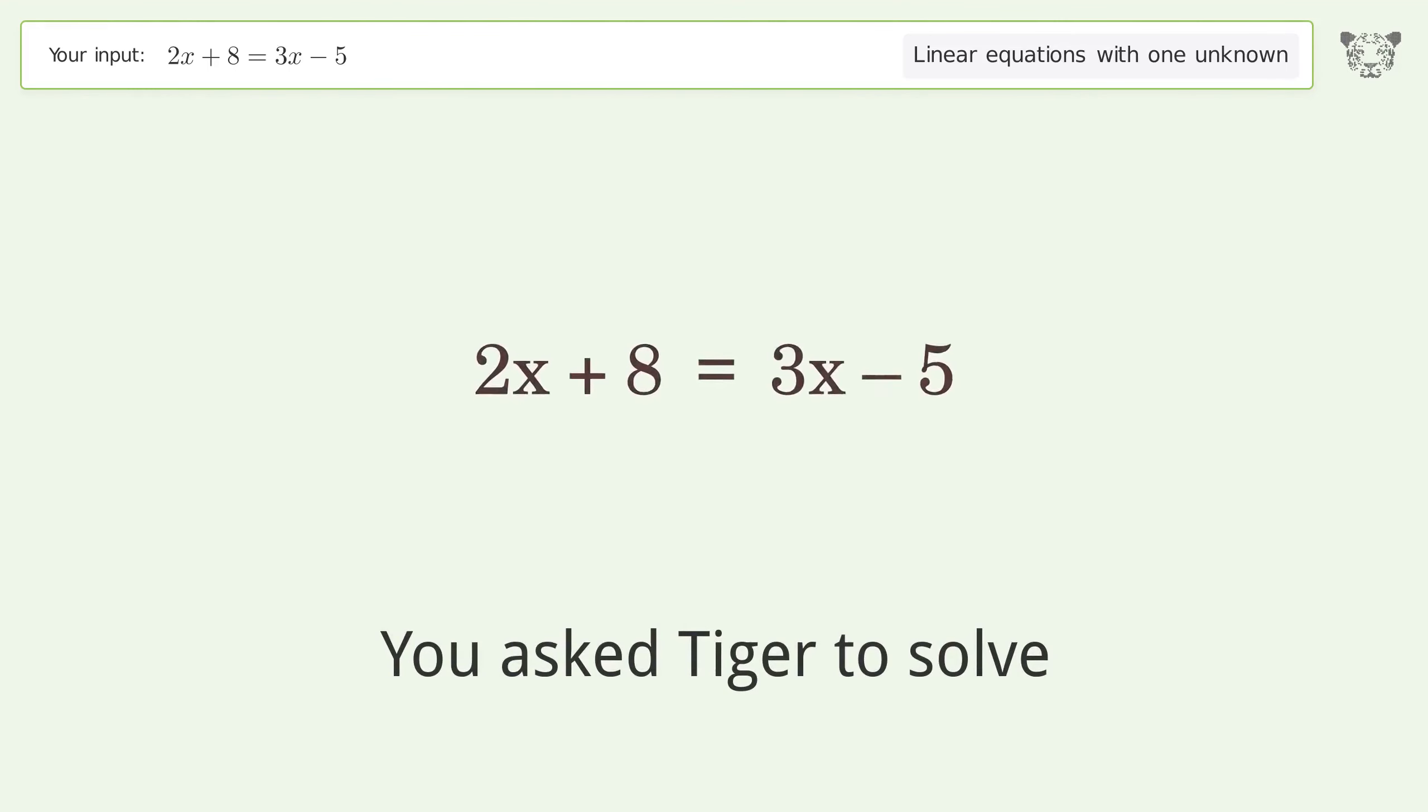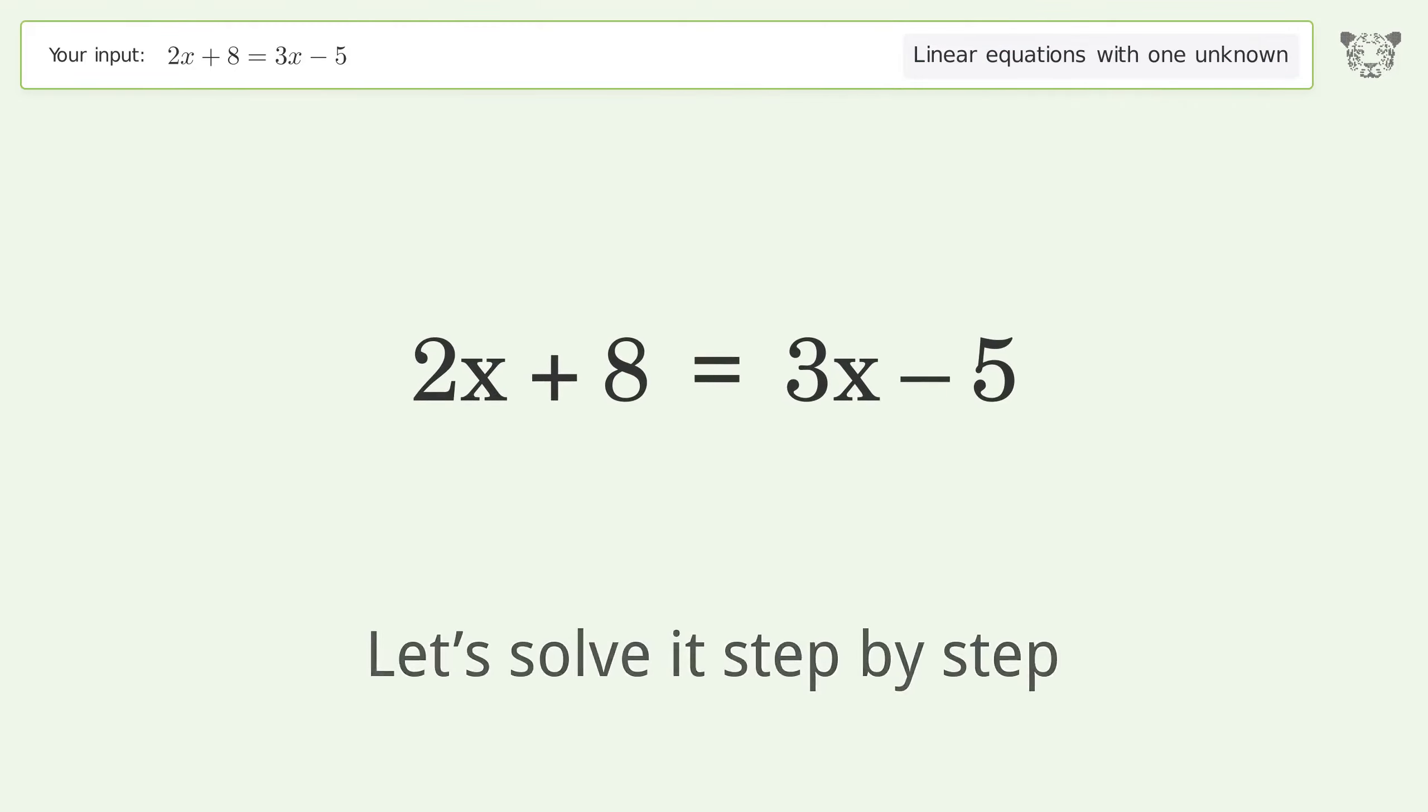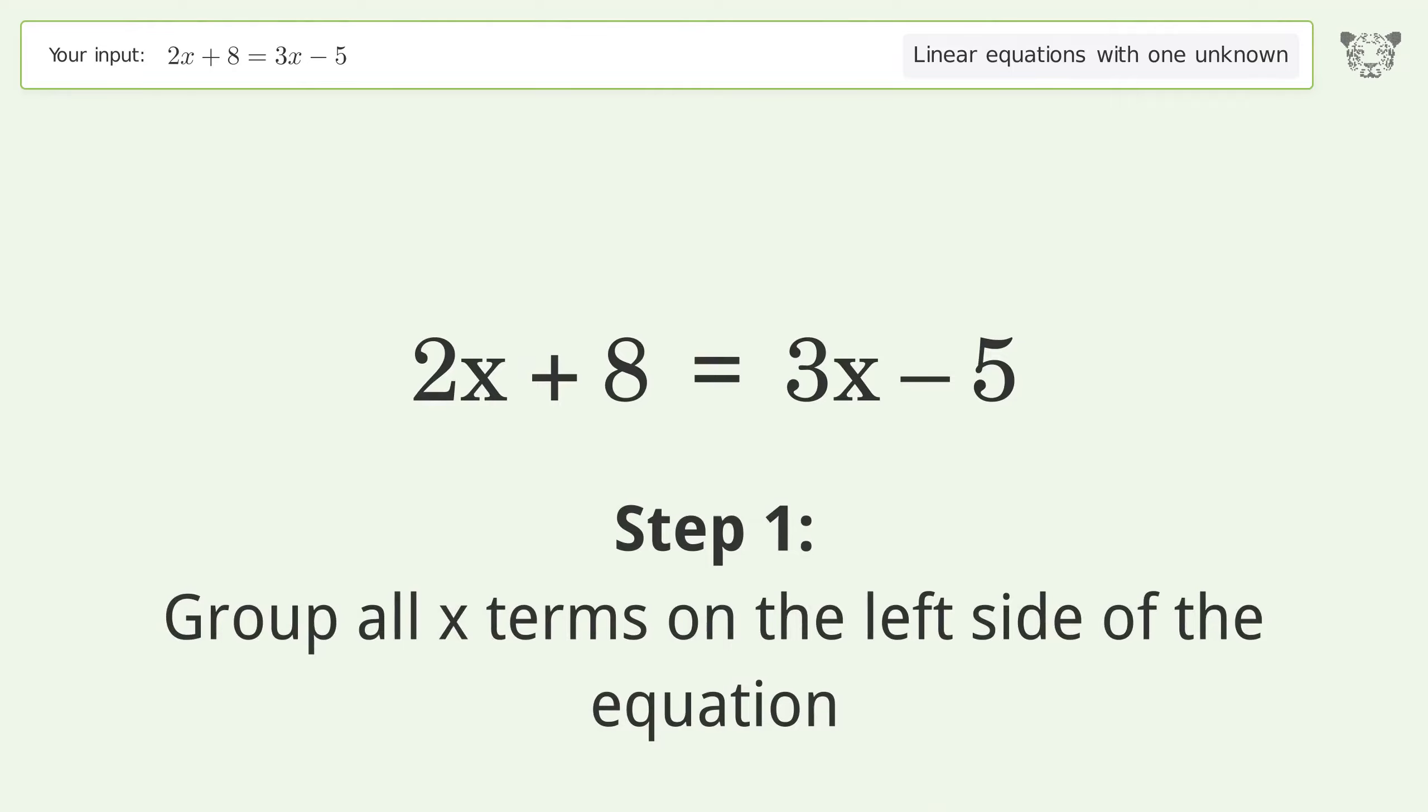You asked Tiger to solve this. This deals with linear equations with one unknown. The final result is x equals 13. Let's solve it step by step. Group all x terms on the left side of the equation.